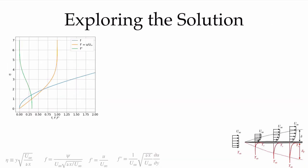The stream function increases as we move away from the plate — more and more mass flow crosses our integration line. It approaches a linear value far away since velocity is u_infinity. The non-dimensional velocity starts at zero (no-slip condition) and goes to 1 far away. The shear stress approaches zero far away as velocity gradients vanish, and f double prime is maximum on the wall.